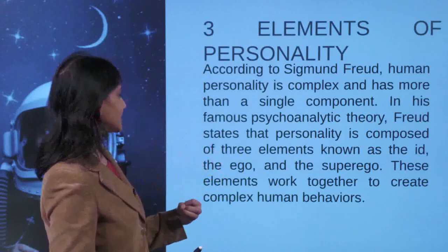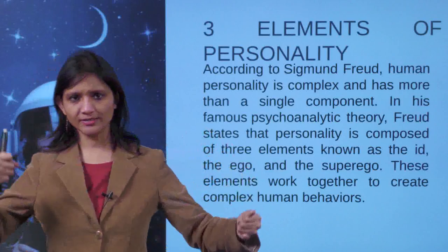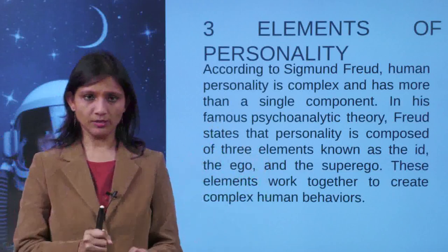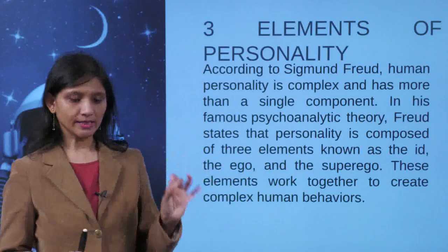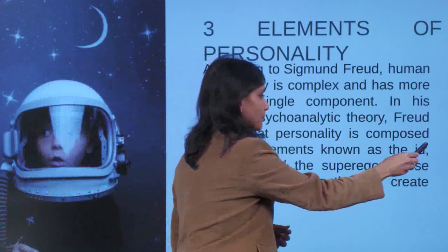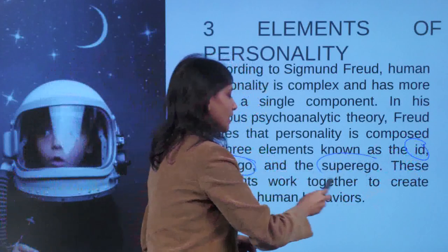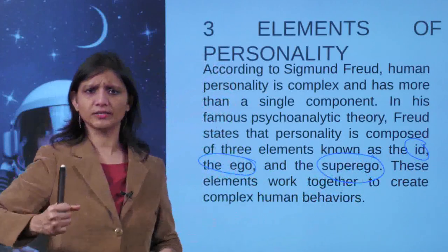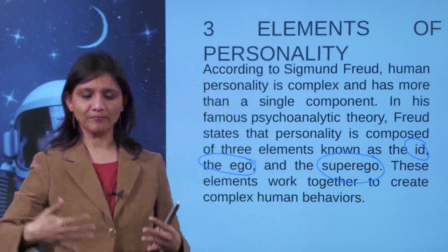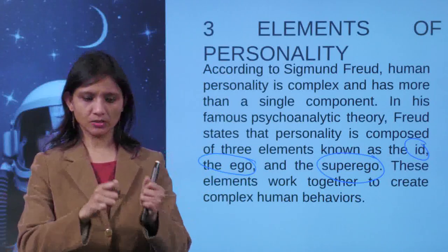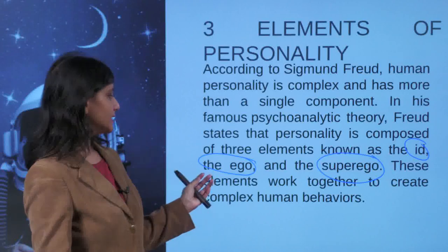In his famous psychoanalytic theory, Freud suggests that personality is composed of three elements. Rather than quantitatively defining personality types, he says a human has three personality types. These are known as the id, the ego, and the superego. The word ego is often used incorrectly in everyday language. When we look into each of these types separately, you will understand that id, ego, and superego actually form your identity and personality type.